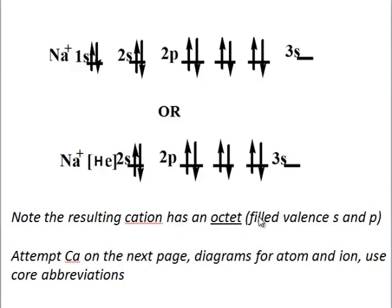Again, this cation has an octet: filled valence s and p subshells. This is why they naturally occur in cation form. Show that to yourself by attempting calcium on the next page. Diagrams for atom and ion, and use core abbreviations.